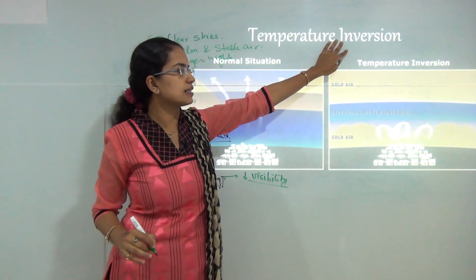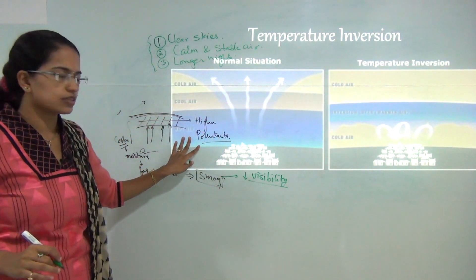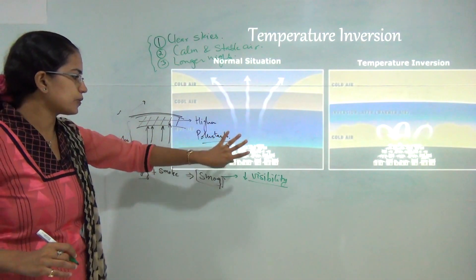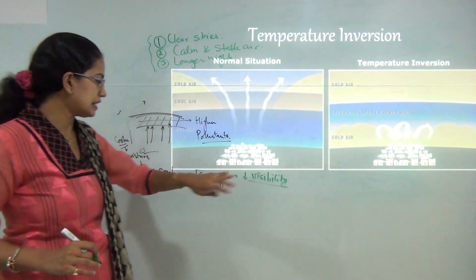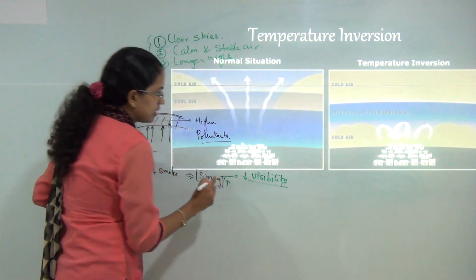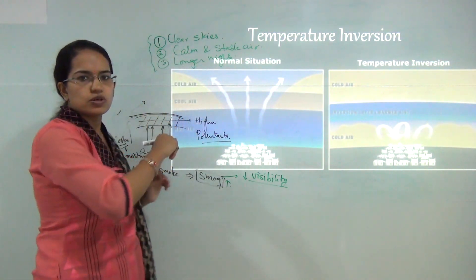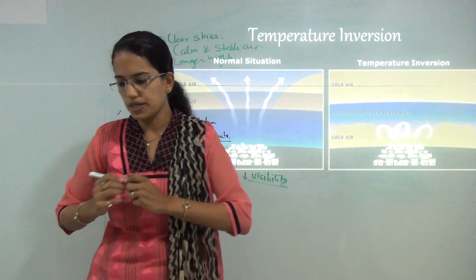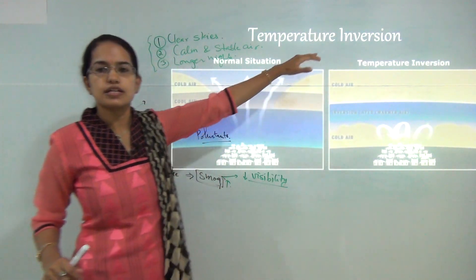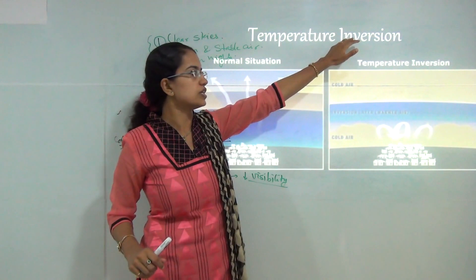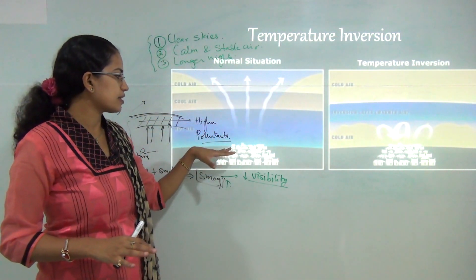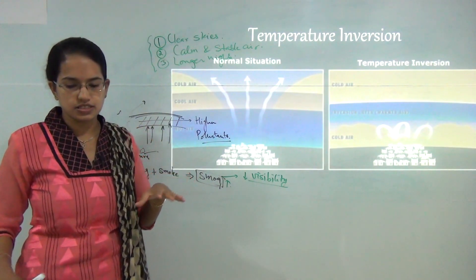Once there is a temperature inversion, it may lead to economic implications in the form of higher pollutants, reduced visibility, and increased fog and smog levels. Based on this, there was a question asked in UPSC 2013 which talked about the implications of temperature inversion, with the main focus on economic implications.